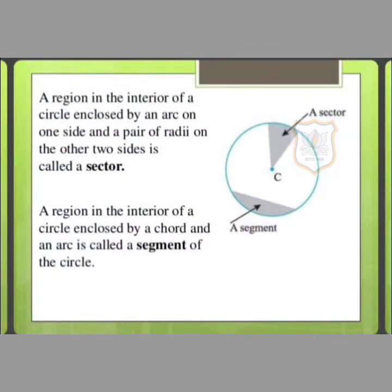A region in the interior of a circle enclosed by an arc on one side and a pair of radii on the other two sides is called a sector. And a region in the interior of a circle enclosed by a chord and an arc is called a segment of the circle.